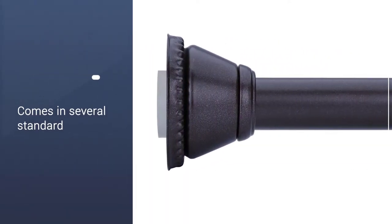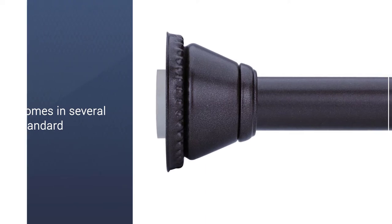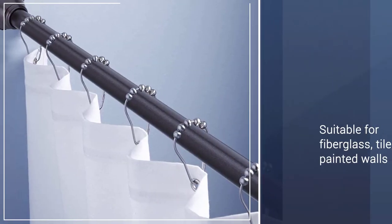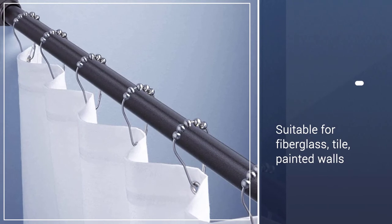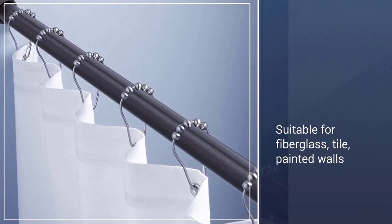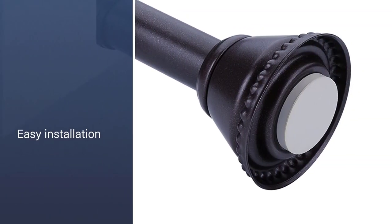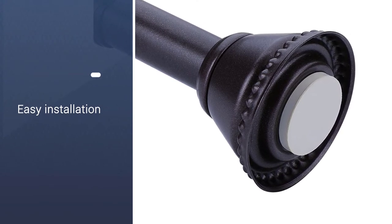The rubber end caps keep the rod firmly in place. You can remove them before installation to slip round shower curtain hooks over the bar, and it's suitable for fiberglass, tile, painted walls, or even wood paneling.